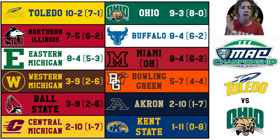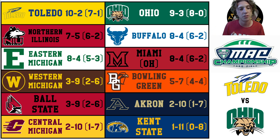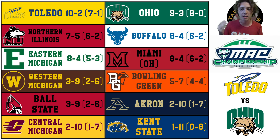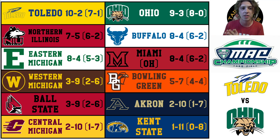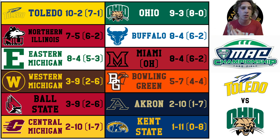Let's move over to the Ball State Cardinals. This is a team that loses a ton of production offensively and defensively, while there are a couple of positions that do return a lot of talent — the secondary is one. But you lose Carson Steele at running back and there's going to be a change at the quarterback position. There's a lot of change with Ball State, and it definitely feels like a team that's going to be very thin. I do think there are enough pieces to pull out a couple of games in conference play, so they're sitting at 3-9, fifth place in the MAC West.